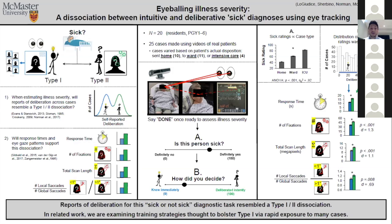Participants could perform the task with reasonable accuracy — sick ratings varied as a function of case type severity. More importantly, looking at the deliberation ratings across all trials and all participants, it almost approximates a bimodal distribution as predicted. We conducted a median split within subjects, so for each subject half their trials were considered type one and half considered type two. All the eye tracking metrics described — response time, fixations, scan path length, and local/global saccade ratio — were larger for type two trials than type one trials.